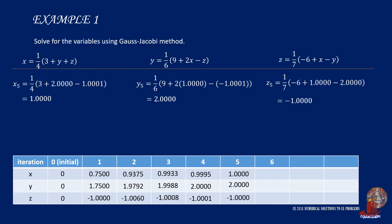At this point, you can see that the values are already constant. So even if we proceed to the sixth iteration, x sub 6 is one-fourth of 3 plus 2 minus 1 is 1. y sub 6 is one over 6 of 9 plus 2 times 1 minus negative 1 to have 2. Then z sub 6 is one over 7 of negative 6 plus 1 minus 2 to have negative 1.